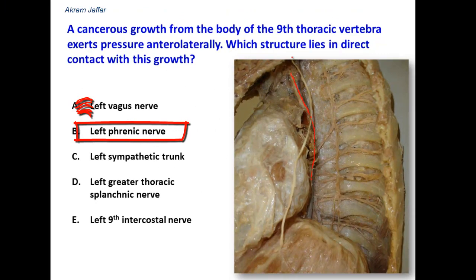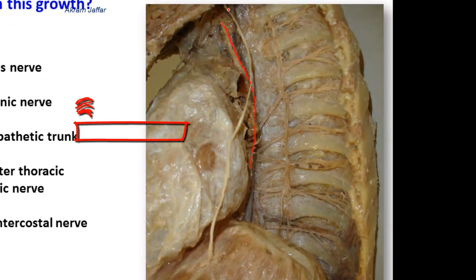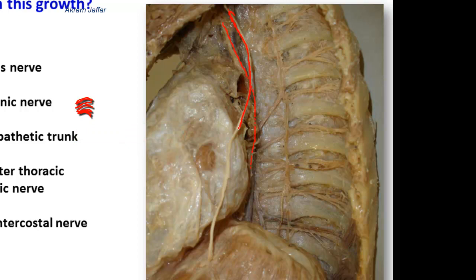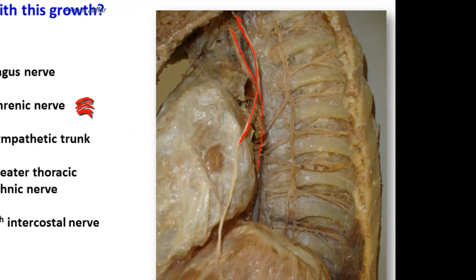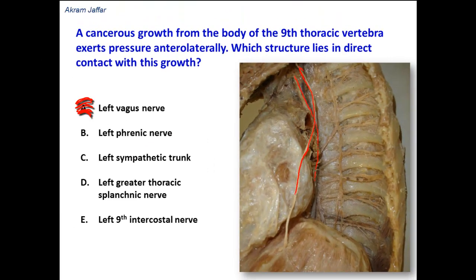The phrenic nerve descends from the superior mediastinum. Then in the middle mediastinum, it is related to the front of the root of the lung, then the pericardium, and goes into the diaphragm. It is away from the thoracic vertebrae.